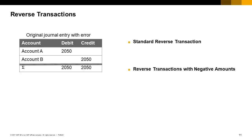Users can make input errors. As a result, the journal entry created may contain incorrect information. To provide an audit of the correction, the user must first reverse the journal entry in error and then capture the document correctly. To cancel a manual journal entry, choose Cancel from the data menu or directly from the context menu of the journal entry. You can specify whether reversal transactions are performed as standard reverse transactions or as reverse transactions with negative amounts.